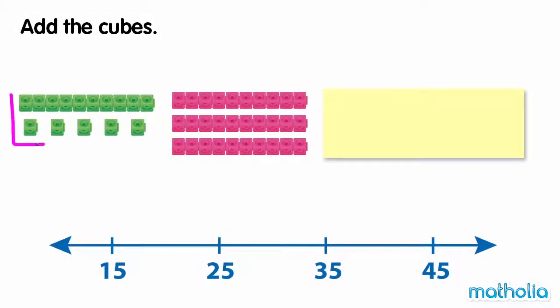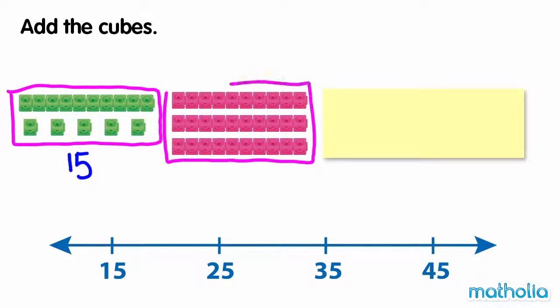Add the cubes. There are 15 green cubes and there are 30 pink cubes. We need to find 15 plus 30. 30 is three tens. To add the cubes, we can start at 15 and add three tens.